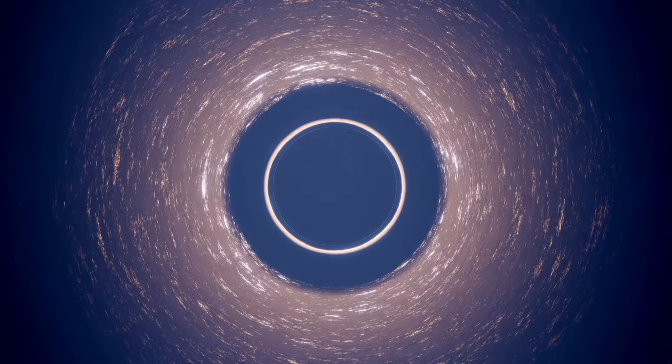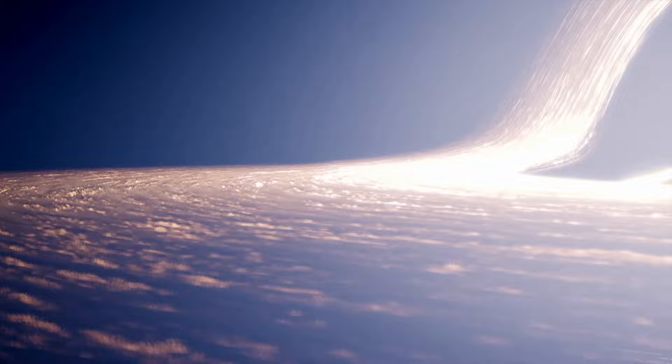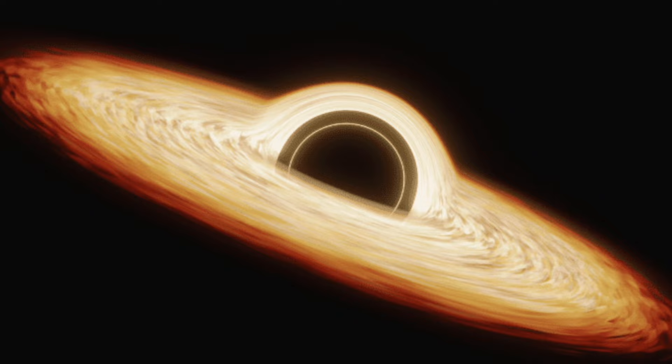While the black hole itself remains invisible, nearby objects influenced by its gravitational pull are visible in the image. The observed emissions in radio and infrared wavelengths originate from superheated gas and dust being drawn towards the black hole, shedding light on its behavior and characteristics.